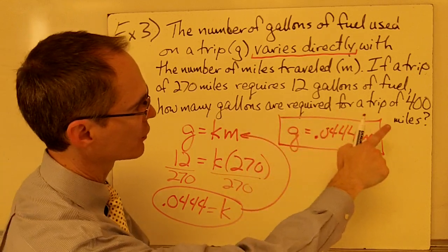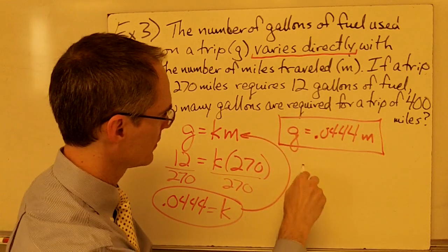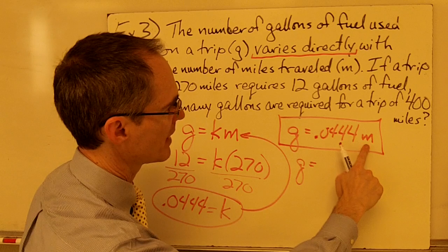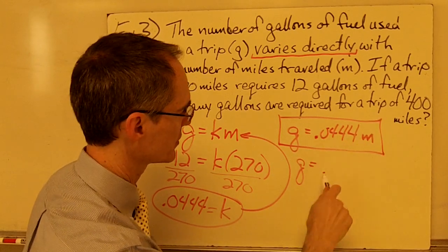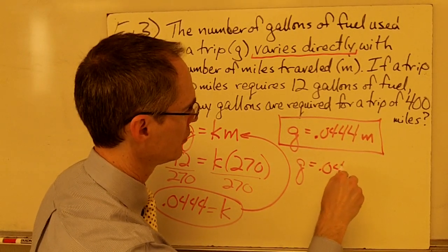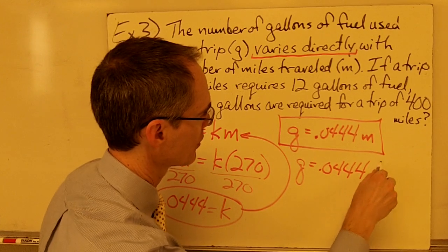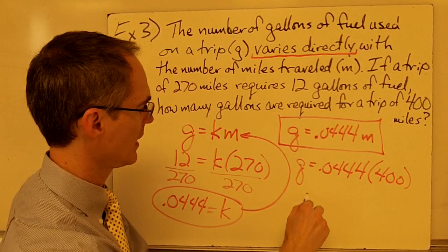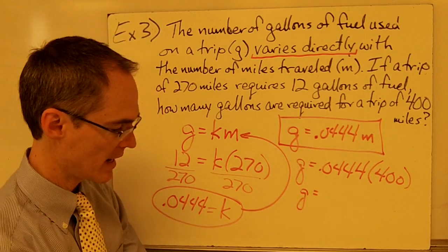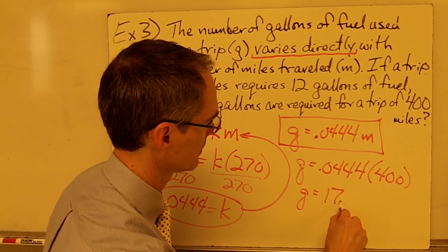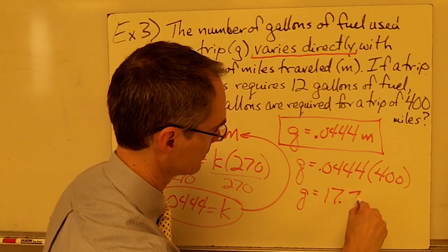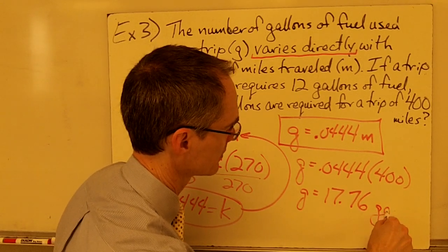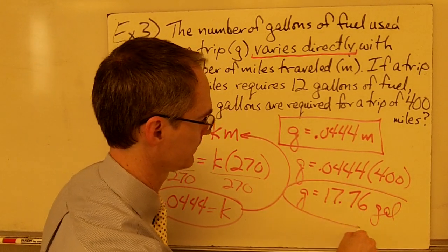How many gallons are required for a trip of 400 miles? That means the number of miles driven is going to be 400. So, I substitute that in here for m. 0.0444 times 400. And if I punch that into my calculator, I get 17.76 gallons.